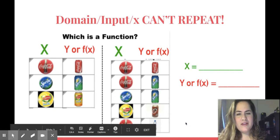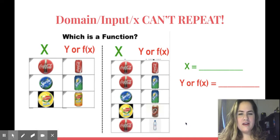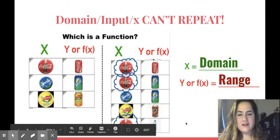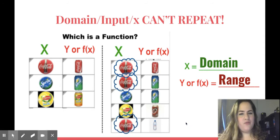So in math, something similar happens. You can think of things as X and Y. Sometimes they'll use the word domain for X or range for Y. If you see domains or X values that repeat, that means something's broken. It's not functioning properly. The rule is that X can't repeat.